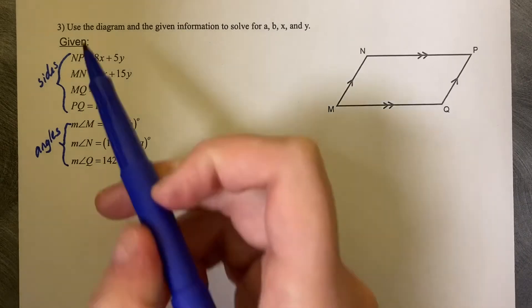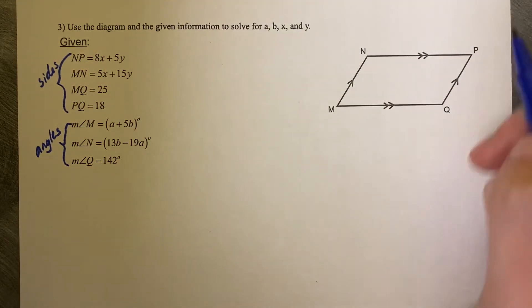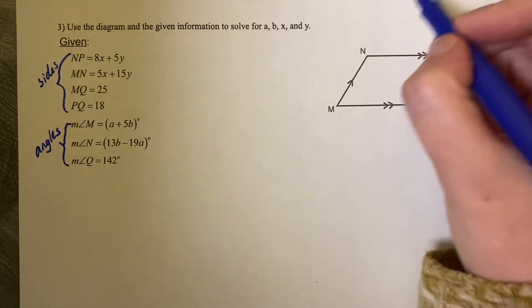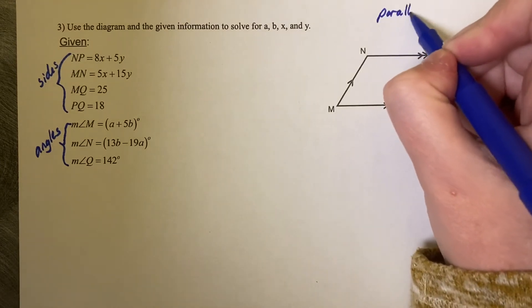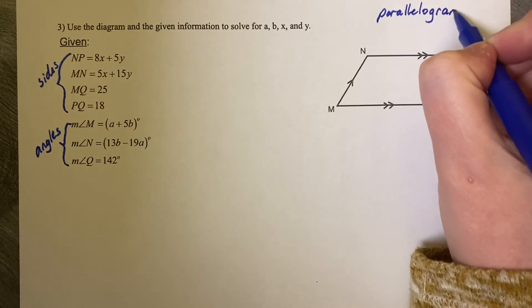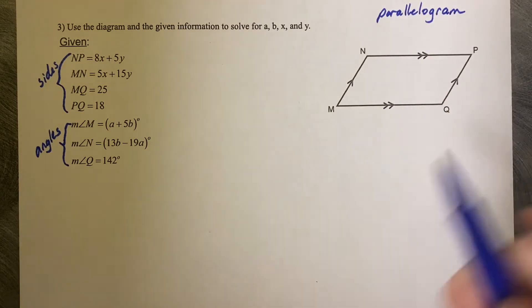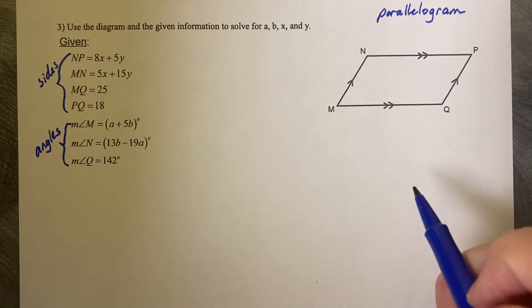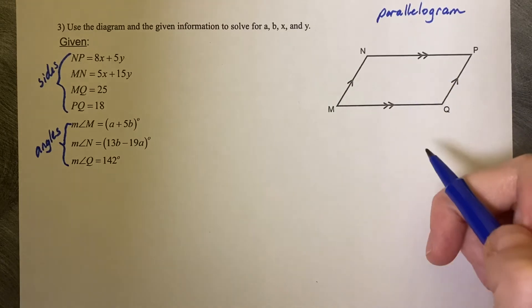It says that NP... also what do you know about this diagram? I know that this diagram is a parallelogram. I know it's a parallelogram because it's got two pairs of opposite sides that are parallel by the arrows on the diagram.